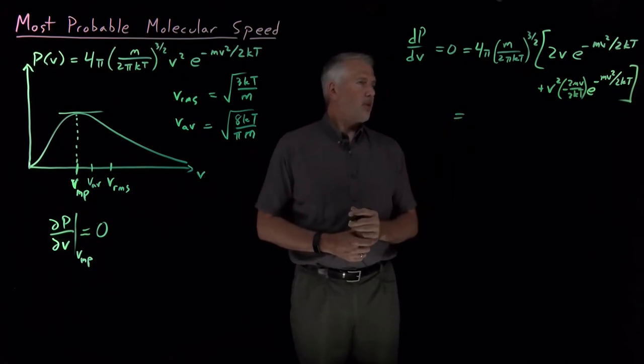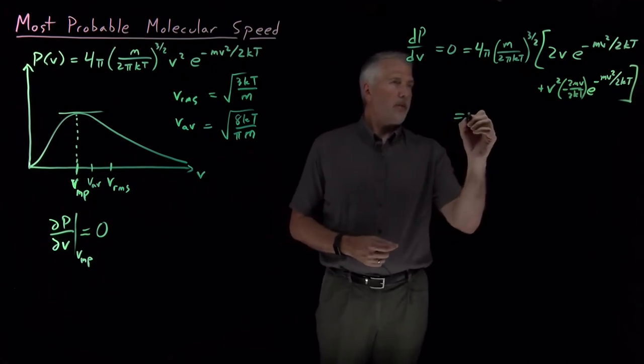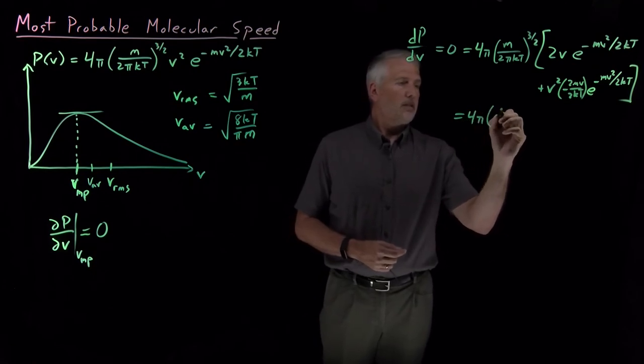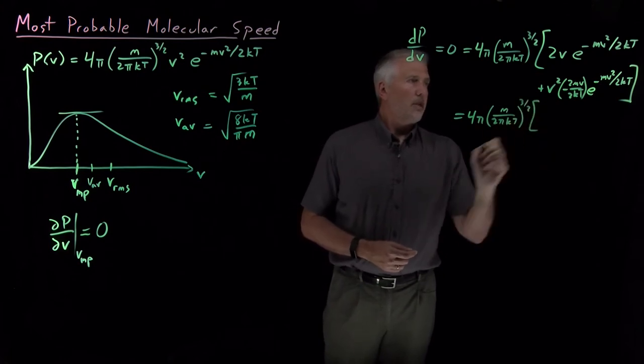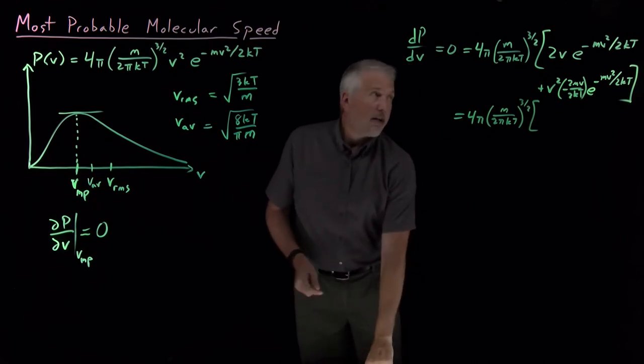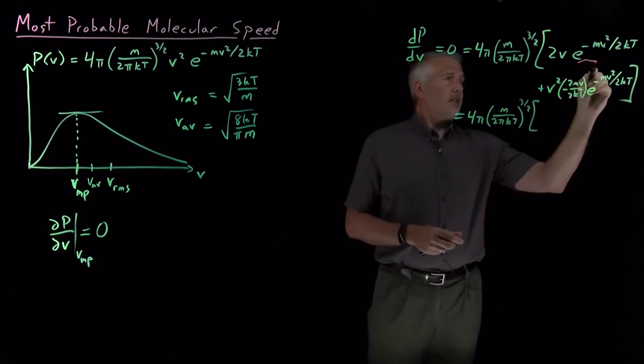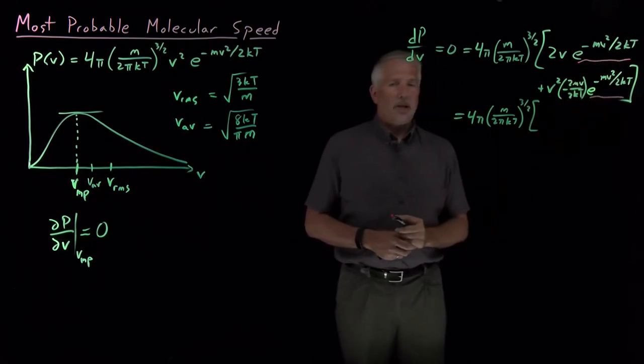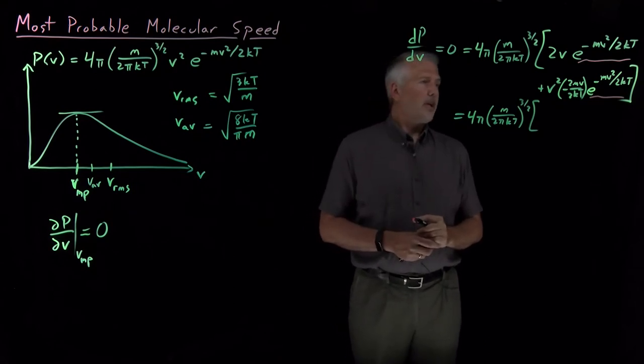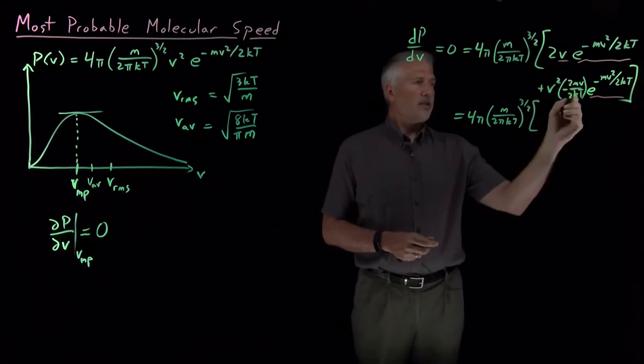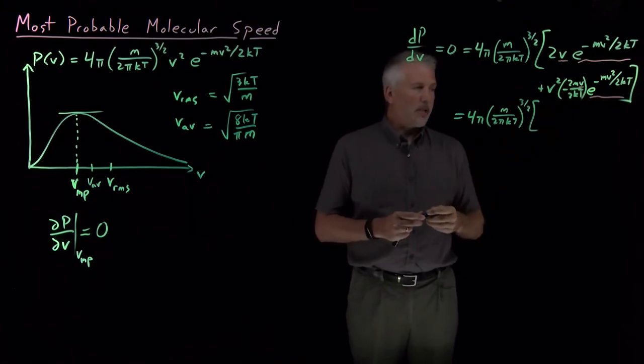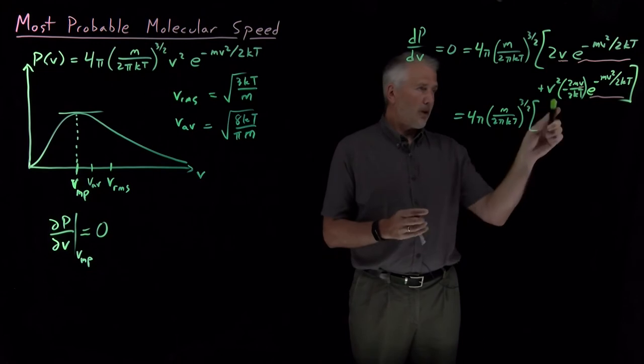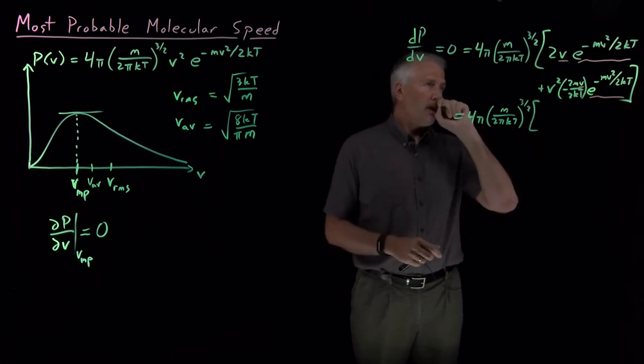We can clean that up quite a bit by pulling some things out of the brackets. So the constants out front, inside the brackets, it looks like this exponential and this exponential are the same. I can pull those out of the brackets. Likewise, I have a factor of V here, and there's at least one factor of V in the second term that I can pull out of the brackets.